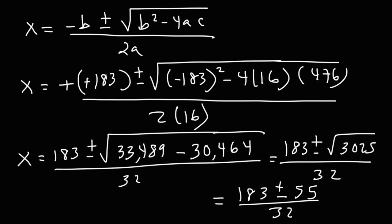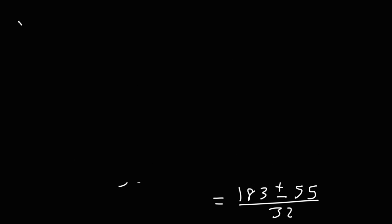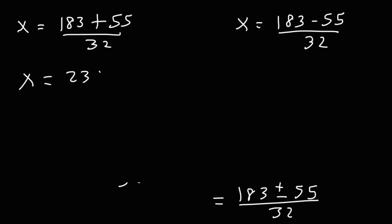So this will give us potentially two answers. The first one is going to be 183 plus 55 divided by 32. 183 plus 55 is 238, and 238 divided by 32, you can reduce that to 119 over 16 if you divide both numbers by 2.